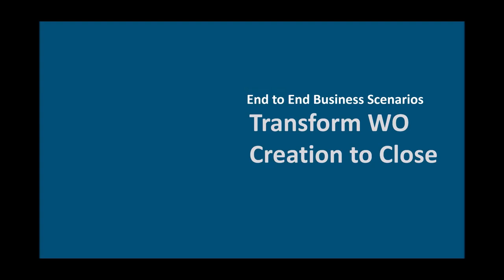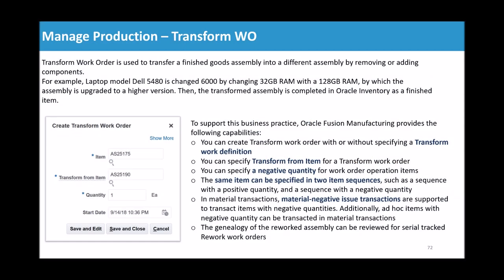In today's session we'll discuss Transform Work Order, a new concept added in Fusion Applications — we didn't have any similar feature in 11i or R12. Transform Work Order is used to transfer a finished good assembly into a different assembly by removing or adding some components. For example, suppose we have a laptop model Dell 5480 with 10 units on hand, but we now got a demand for a different product, say Dell 6000. The BOM structure for 5480 and 6000 is very similar, but there are a few components which are different.